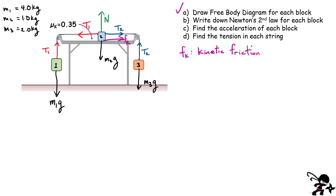So these are the free body diagrams for each block. The suspended ones are pretty straightforward; the block on the tabletop has more forces acting on it. Part B says write down Newton's second law for each block. Remember: Newton's second law says you add up all the forces acting on any block — there could be many terms — and that has to equal the mass of that block multiplied by its acceleration. We have three blocks, so we write Newton's second law three different times.